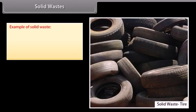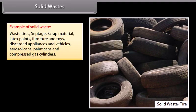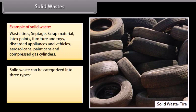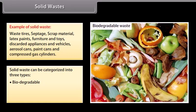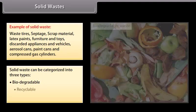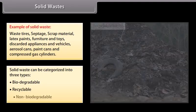Examples of solid waste include waste tires, septage, scrap material, latex paints, furniture and toys, discarded appliances and vehicles, aerosol cans, paint cans, and compressed gas cylinders. Solid waste can be categorized into three types: biodegradable, recyclable, and non-biodegradable.